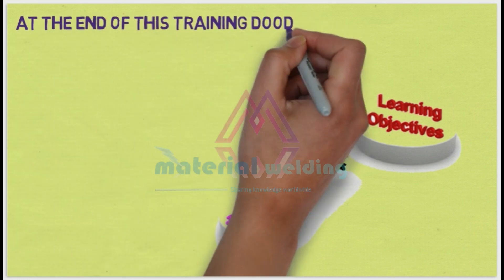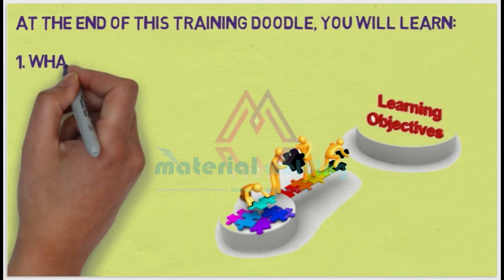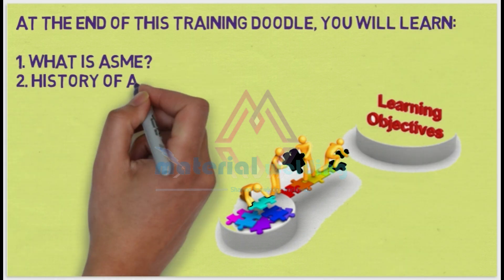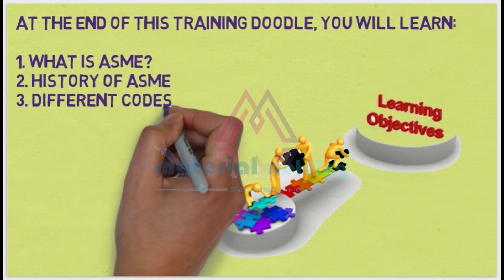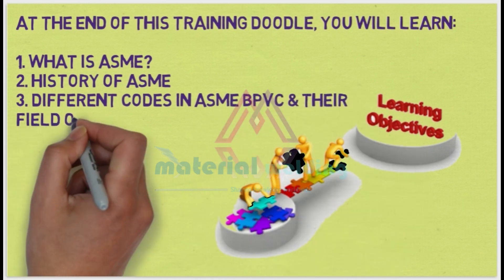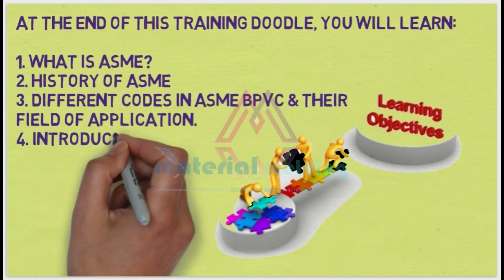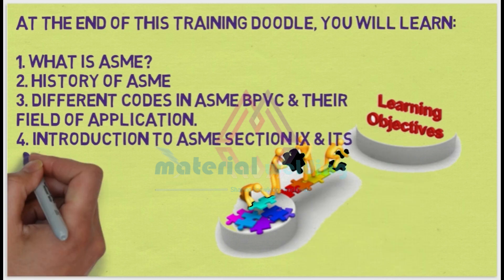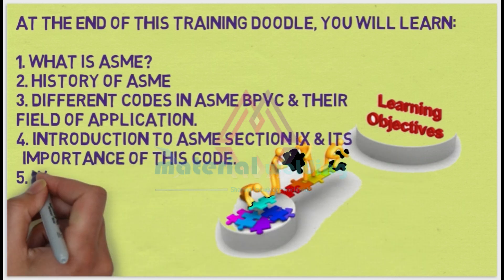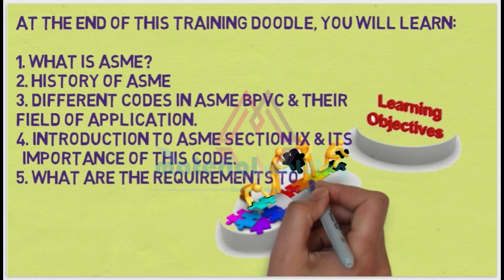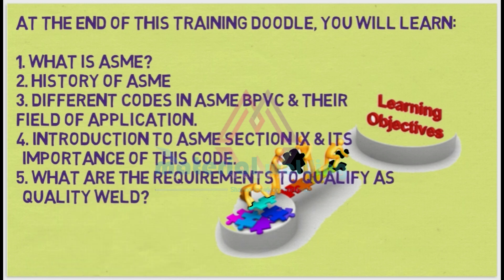At the end of this training video, you will learn what is ASME, what is the history of ASME, different codes in ASME — BP, VC and their field of application — introduction to ASME Section 9 and its importance, and what are the requirements to qualify as quality belts.